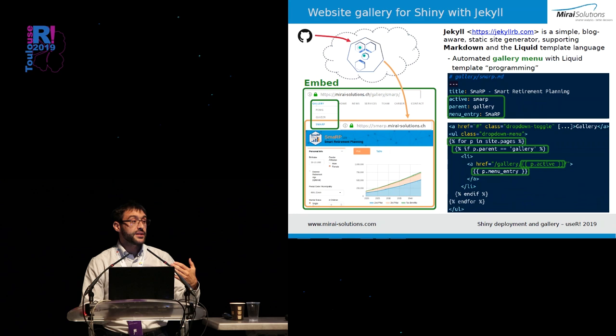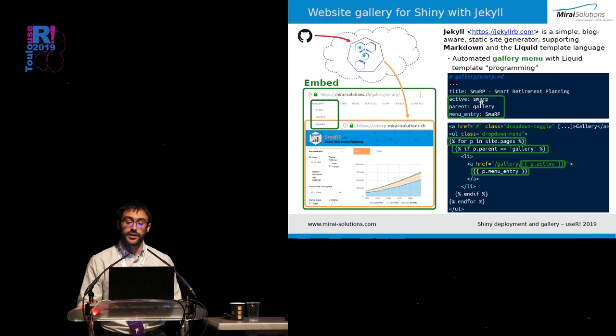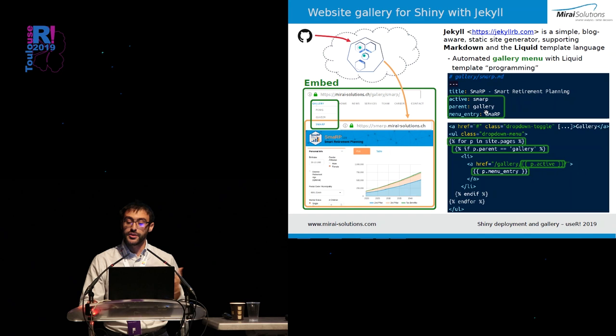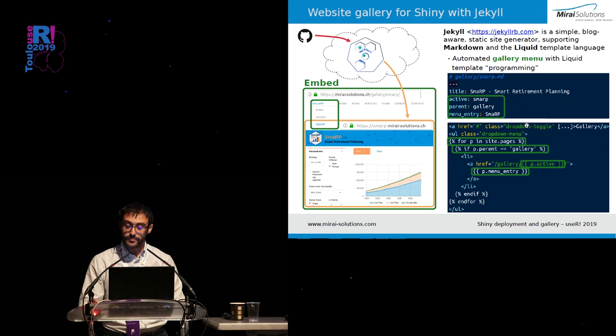On top of this, you can use Jekyll to create a drop-down menu dynamically. You need another set of metadata in the YAML file — like the entry name for smart.md. The key part of the code that creates the gallery menu dynamically loops over pages, checks if a page is part of the gallery, and creates an entry with the defined text and a link to the actual app page.